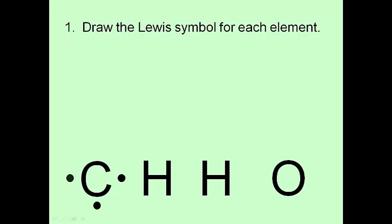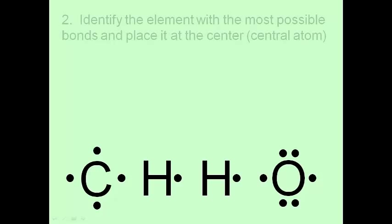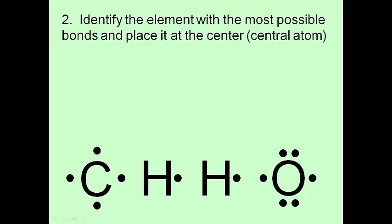First thing I want you to do is draw the Lewis symbol for each of your elements. And I'm just going to blow through this real fast. Because by now, you better be good at drawing Lewis symbols. Next, identify the element with the most possible bonds and place it as the center. And that's going to be called your central atom. So I look at each of them, and I remember that single dots represent bonds. So carbon has four single dots, so it can make four bonds. Hydrogen has one single dot, so it can make one bond. And oxygen has two single dots, so it can make two bonds. Meaning carbon is my central atom.